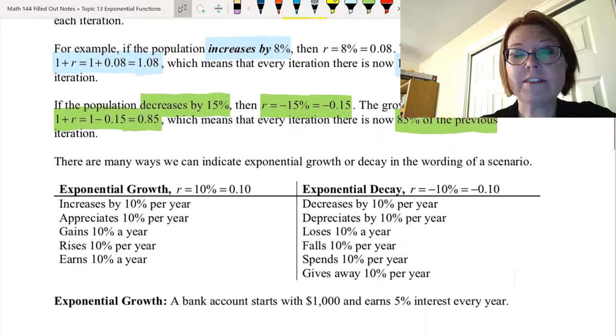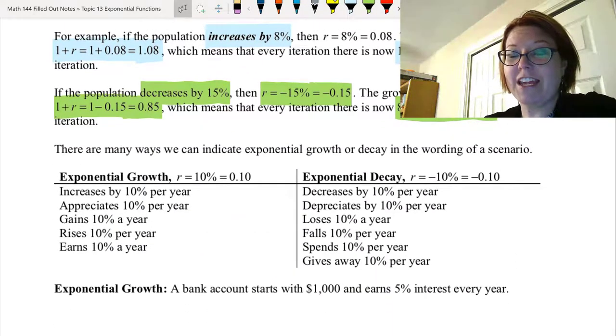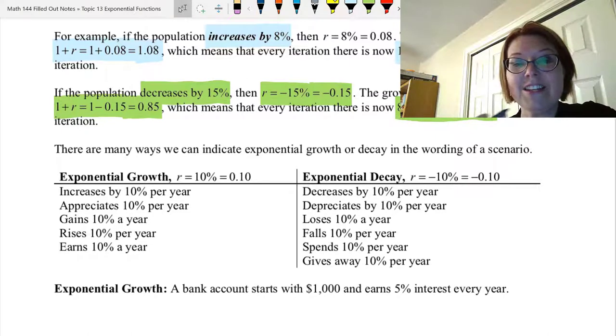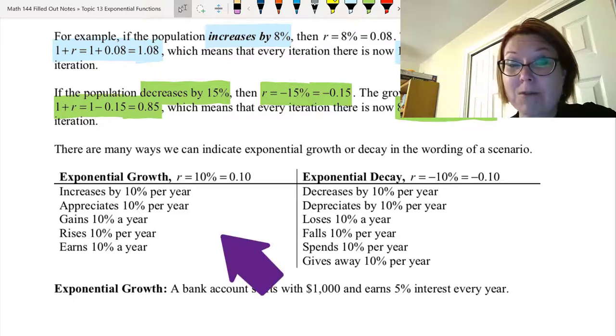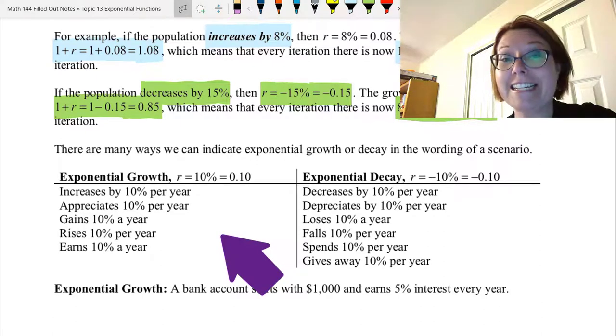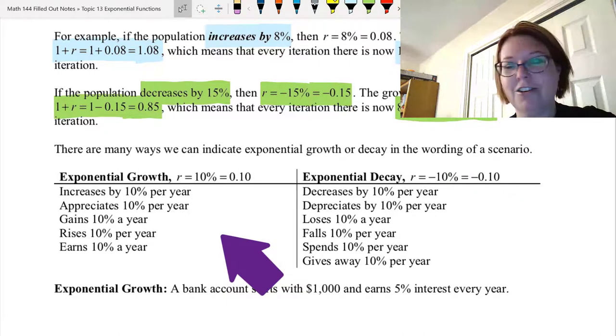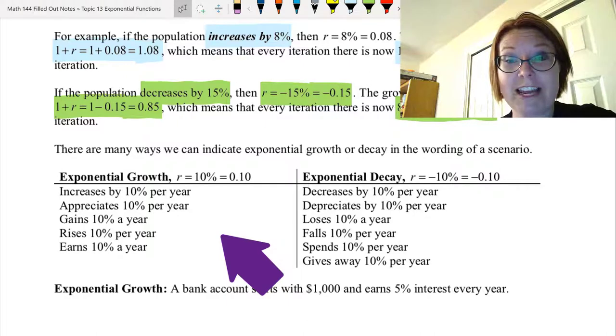There's a lot of different ways we can indicate exponential growth or decay in words. So we can talk about exponential growth. Let's say we're using an r value of 10% or 0.10. To talk about exponential growth, we could say it increases by 10% a year, it appreciates by 10% a year, it gains 10% a year, rises 10% a year, or earns 10% a year.